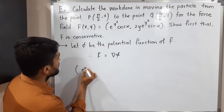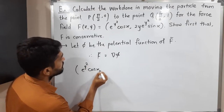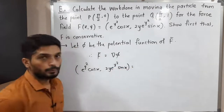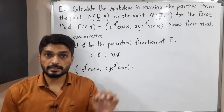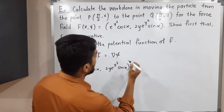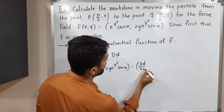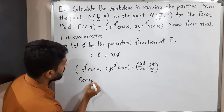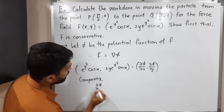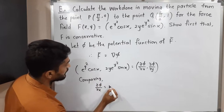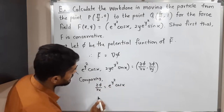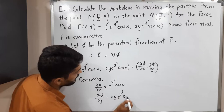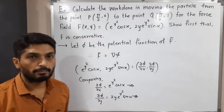Our F bar is e^(Y²)·cosX and 2Y·e^(Y²)·sinX. This equals the del operator applied to φ, meaning ∂φ/∂X and ∂φ/∂Y. Comparing both sides: ∂φ/∂X = e^(Y²)·cosX and ∂φ/∂Y = 2Y·e^(Y²)·sinX.